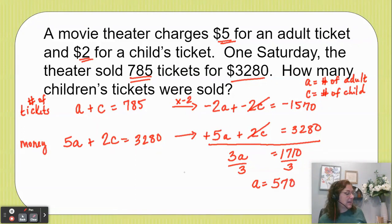Now remember, what did a represent? The number of adult tickets, right. But what did the question ask? The question said how many children's tickets. So we're not finished yet, right.